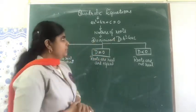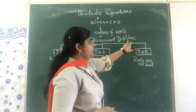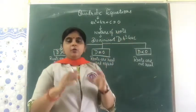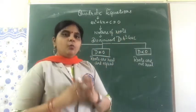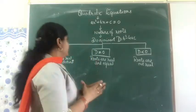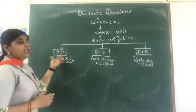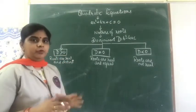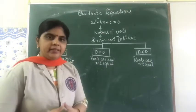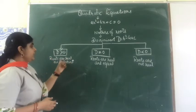Now, what is the discriminant? The discriminant is given by the formula D = b² - 4ac. The value of D decides what the nature of the roots will be. We will start with the first case: when the value of D is greater than 0 — if you get a value of D greater than 0, then we can say that the roots are real and distinct.